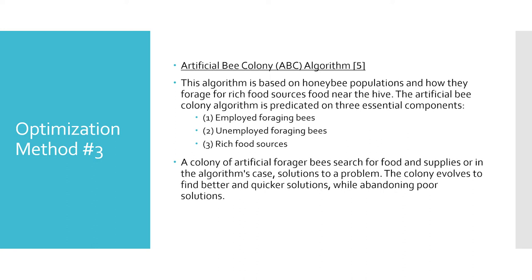The first two components, employed and unemployed foraging bees, search for rich food sources, which is the third component, close to their hive. The model also defines two leading modes of behavior, which are necessary for self-organizing and collective intelligence: the recruitment of foragers to rich food sources, resulting in positive feedback, and abandonment of poor sources by foragers, causing negative feedback.